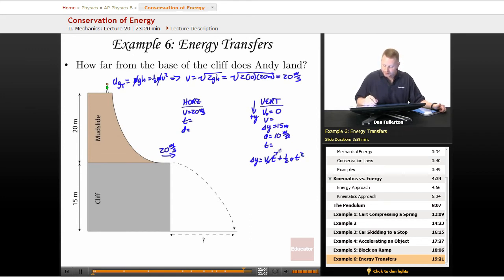V initial is zero, so that whole term goes away. We could then write that t must be the square root of 2 delta y over a, or square root of 2 times 15 meters over 10 meters per second squared. So t equals, when I plug all that into my calculator, I come up with a time in the air of about 1.73 seconds.